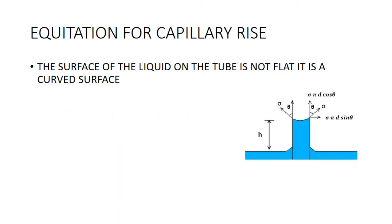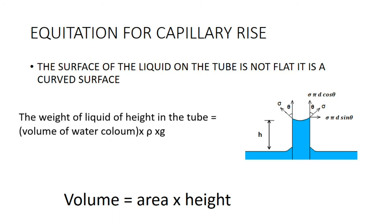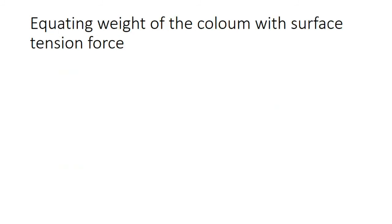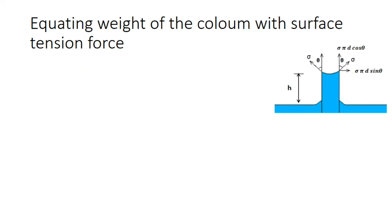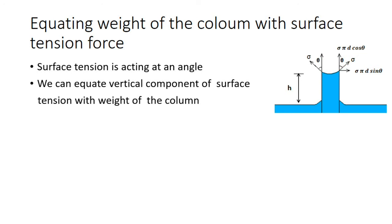Surface tension sigma acts at an angle theta with the vertical. We equate the vertical component of the surface tension force with the weight of the water column of height h. The weight of the column equals volume × density × g = (π/4) × d² × h × ρ × g. The vertical component of the surface tension force equals sigma × circumference × cos theta = sigma × π × d × cos theta.